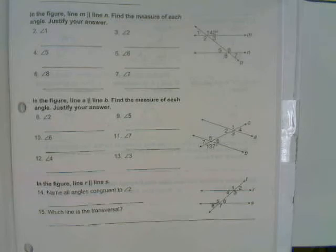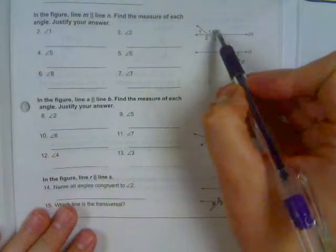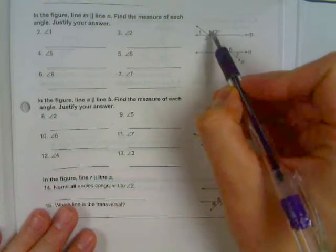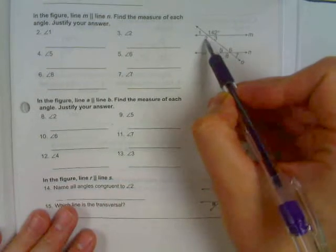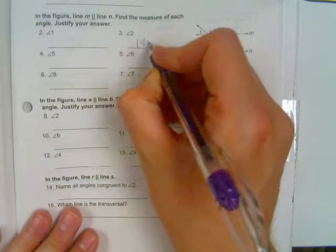What we see right away is we've got this angle marked 142 degrees and we have this angle that's across from it. As we saw in the previous section, those are vertical angles. So angle 2 has to have the exact same measure, so angle 2 is also going to be 142 degrees.